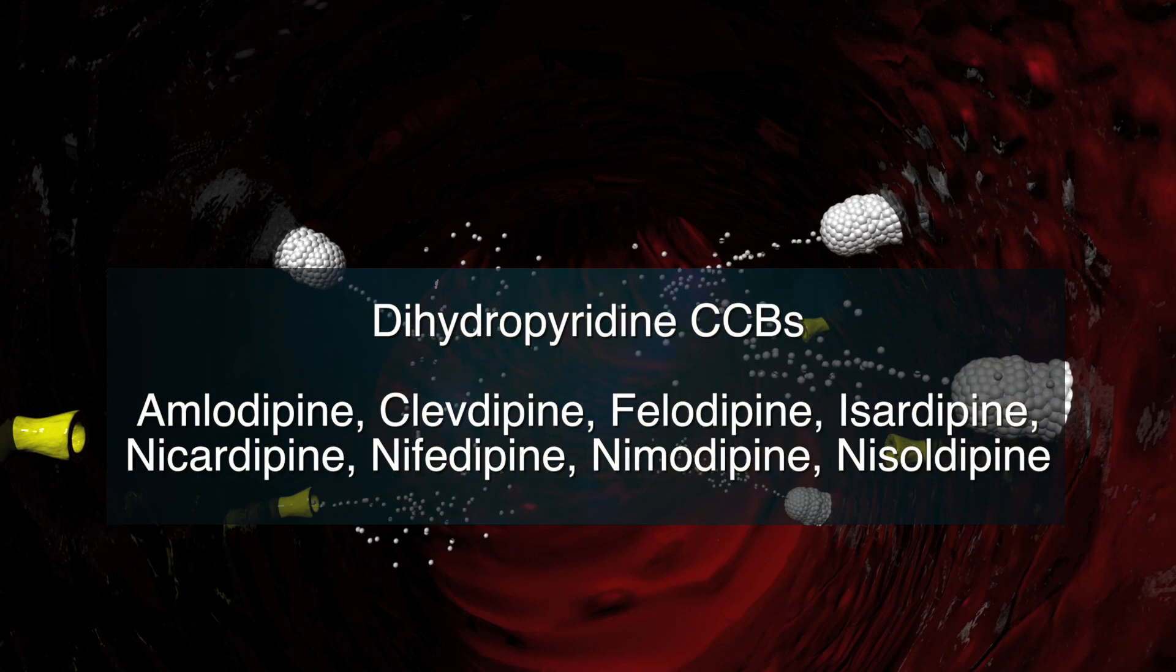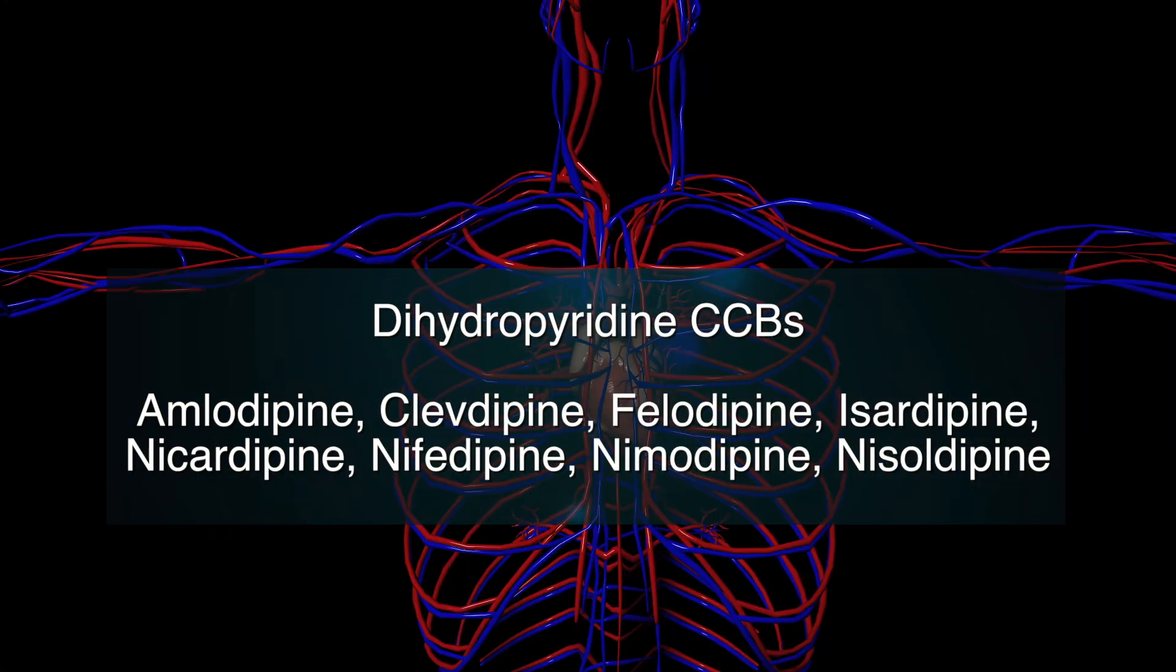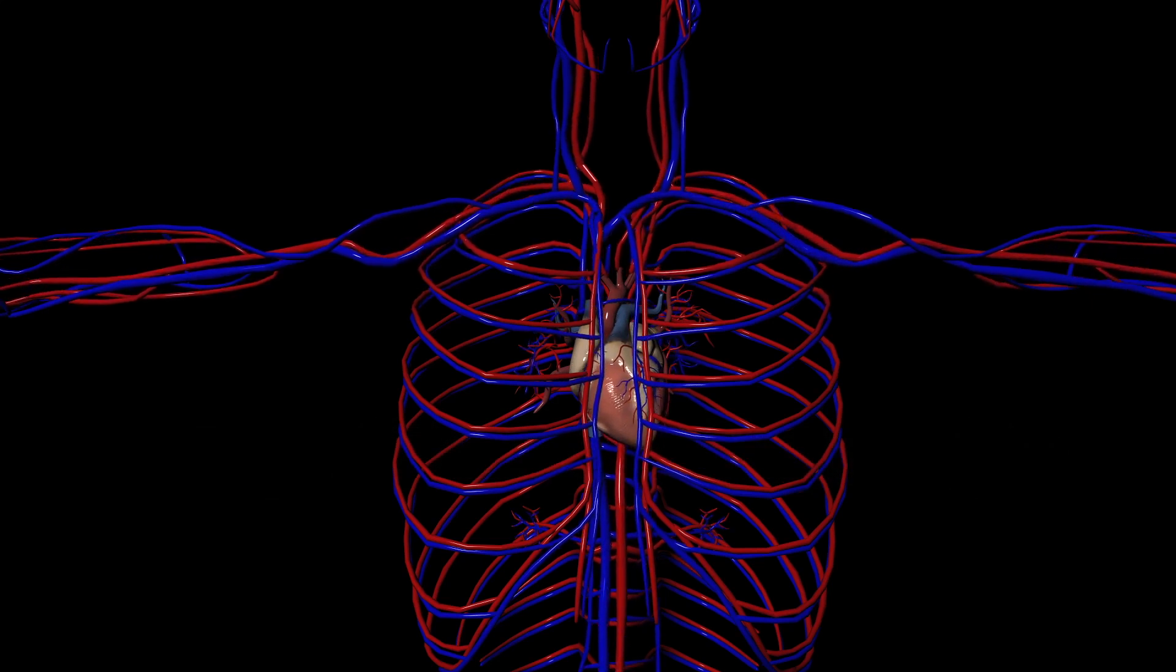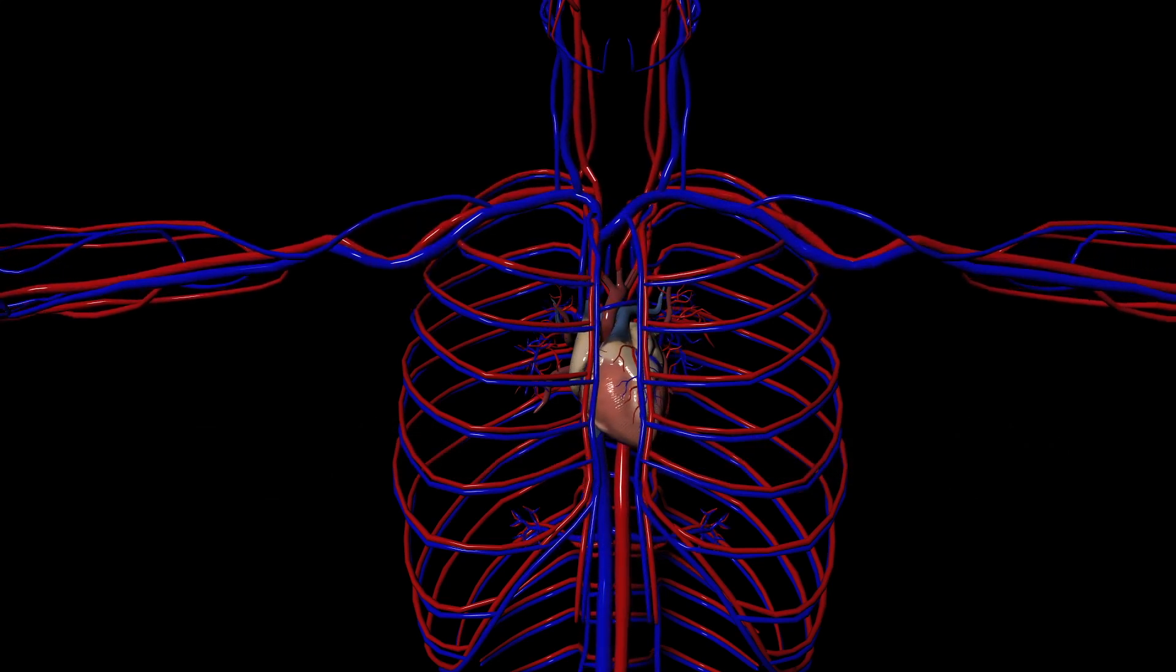Dihydropyridine calcium channel blockers are better at working in the blood vessels. Opening of the blood vessels is called vasodilation. Vasodilation decreases blood pressure.